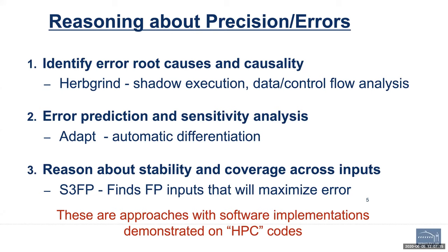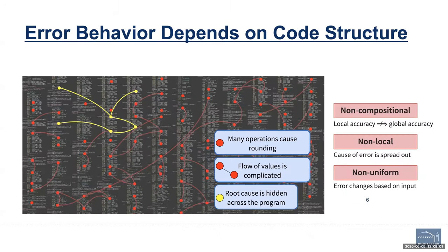We looked for tools that have a software implementation that can give you the answer to a useful question. We identified three main directions: tools that can identify error root causes and causality, tools that can predict the error of a program and give you some notion of sensitivity analysis, and tools that propose inputs that may expose fragilities in the code. The emphasis was on actionable software implementations.